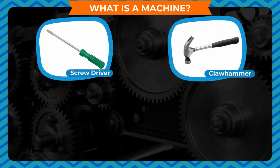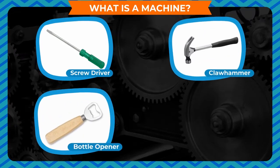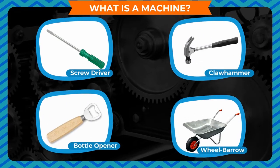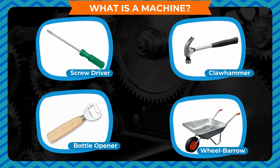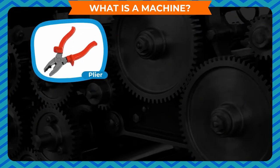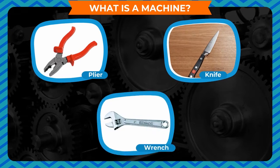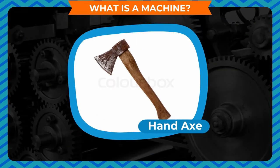Screwdriver, claw hammer, bottle opener, wheelbarrow, plier, knife, wrench, etc. are simple machines. The first machine made by humans is the hand axe.